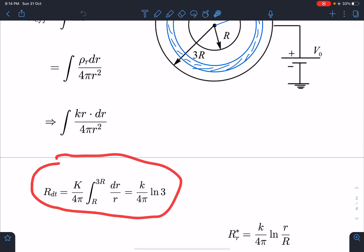This is by the way overall resistance from R to 3R. So R to 3R is the limit, and we are going to get this value as K/(4π) ln 3.